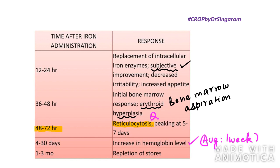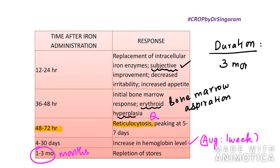A very important point: iron stores take 1 to 3 months to replete. Even if hemoglobin normalizes after a few weeks, treatment should not be stopped. The aim of treating iron deficiency anemia is not just normalization of hemoglobin but repletion of iron stores. Therefore, if asked the duration of treatment for iron deficiency anemia, always answer 3 months.